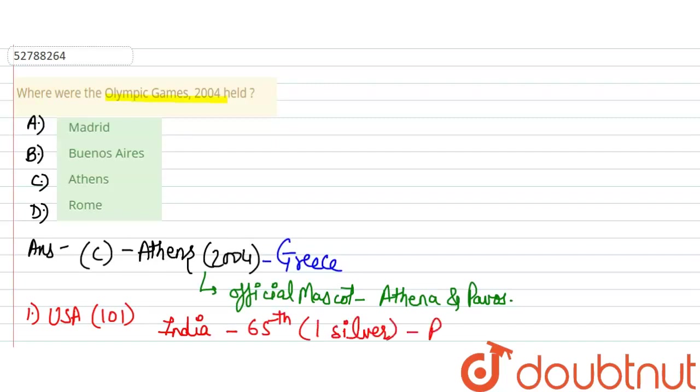India won one silver medal. This medal was related to shooting. The shooting medal was won by Rajyavardhan Singh Rathore.